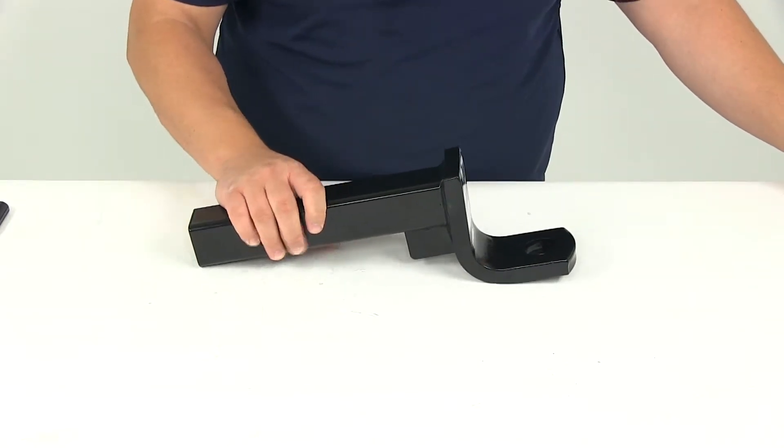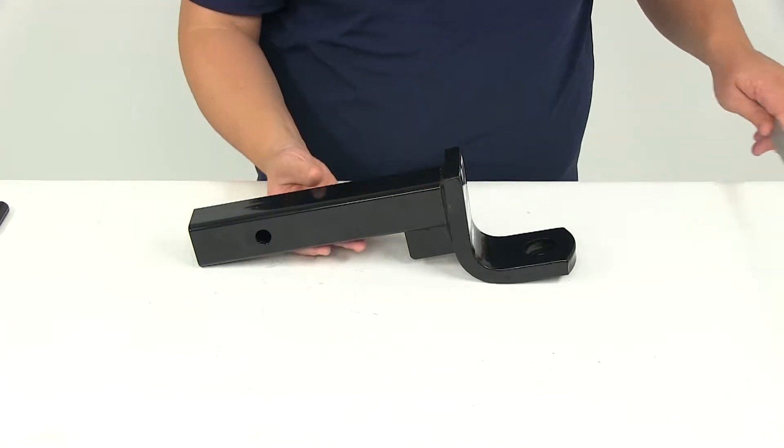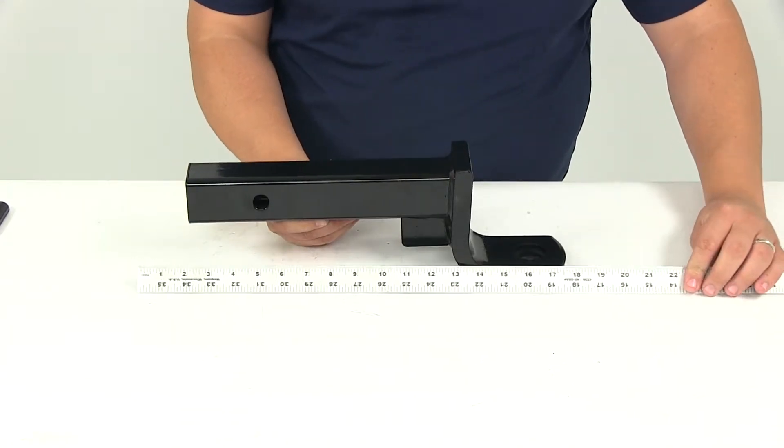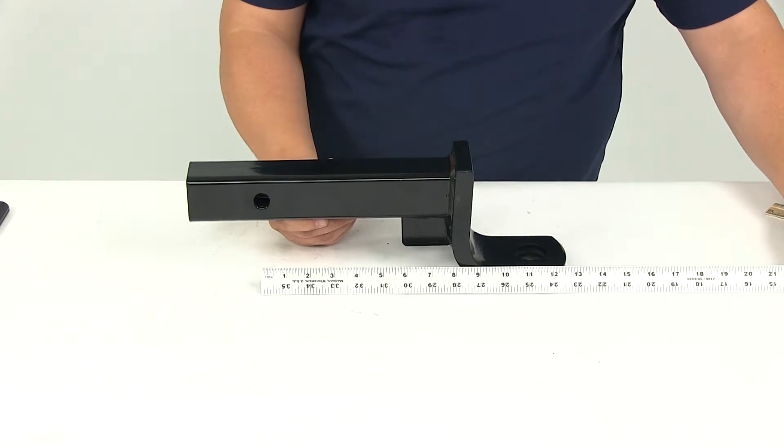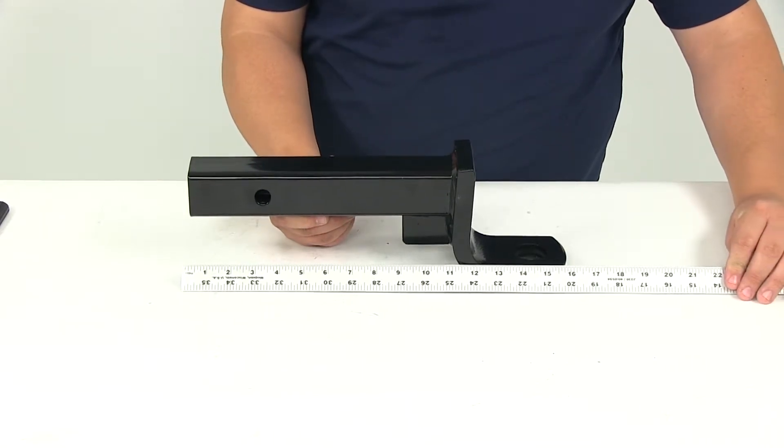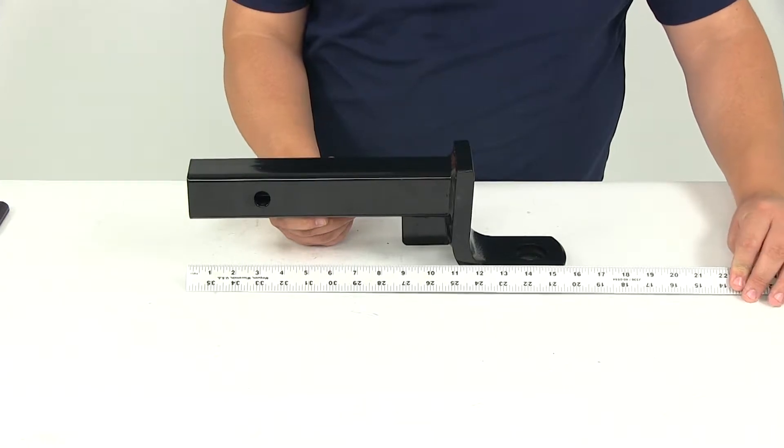If we take a measurement from the center of the hitch pinhole to the center of the ball hole, that's going to give us a measurement of 11 and a quarter of an inch and the overall length measuring from edge to edge is going to be 15 and a half inches.